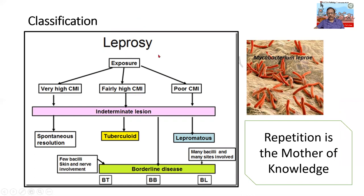If there is one particular slide I would like you to remember, it will be this - how do you classify leprosy? On exposure, there can be patients with very high cell mediated immunity and very poor cell mediated immunity, and in some people it can be midway. Before any particular type of leprosy develops, there is an intervening stage called indeterminate Hansen's or indeterminate lesion - it will look like a dermatitis or inflammation of the skin, and in some patients there can be spontaneous resolution. But mostly it remains as either tuberculoid or lepromatous.